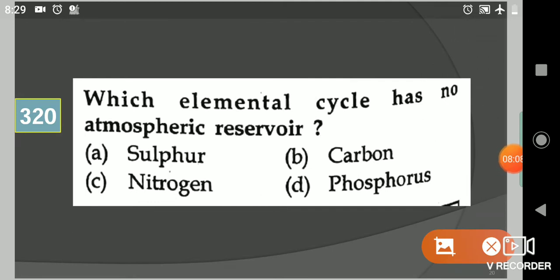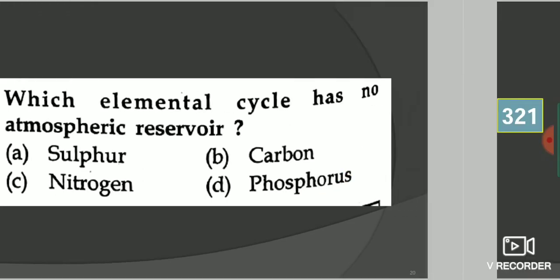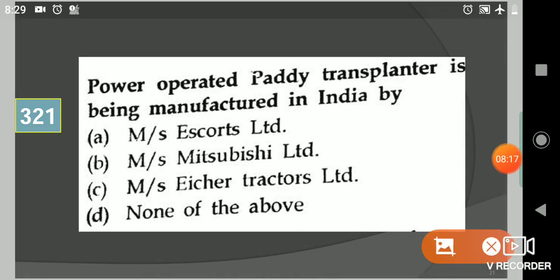Next question: Power operated paddy transplanter is being manufactured in India by? Your options are Mahindra Escorts Limited, Mahindra MESO VC Limited, Eicher Tractors Limited, or none of the above. Your answer is second option, Mahindra MESO VC Limited.